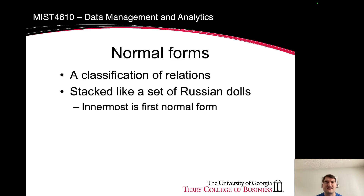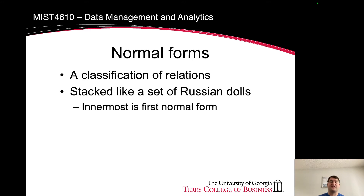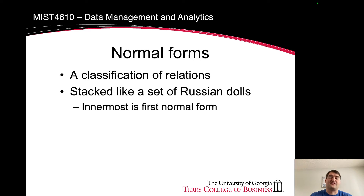With that in mind, let's go ahead and talk about these normal forms. We have four normal forms that we're going to cover in this class. Starting at zero normal form, we refer to that as something that's not normalized — something that is not well-formed.